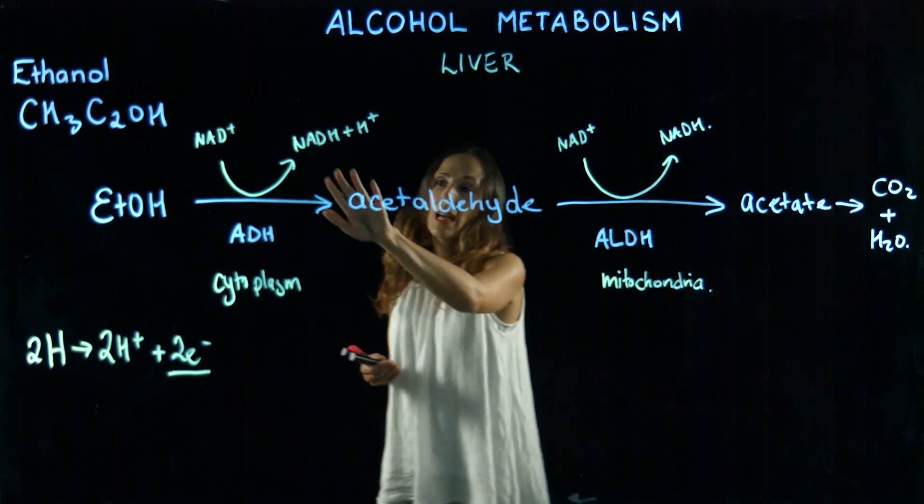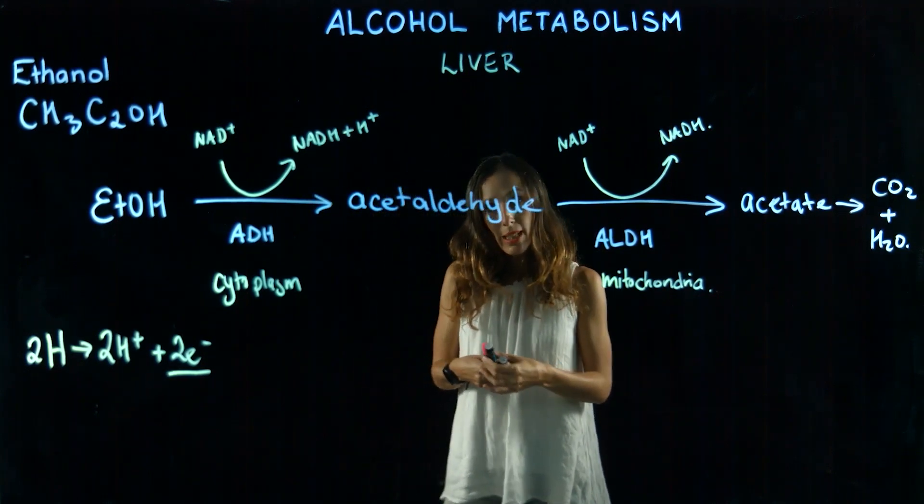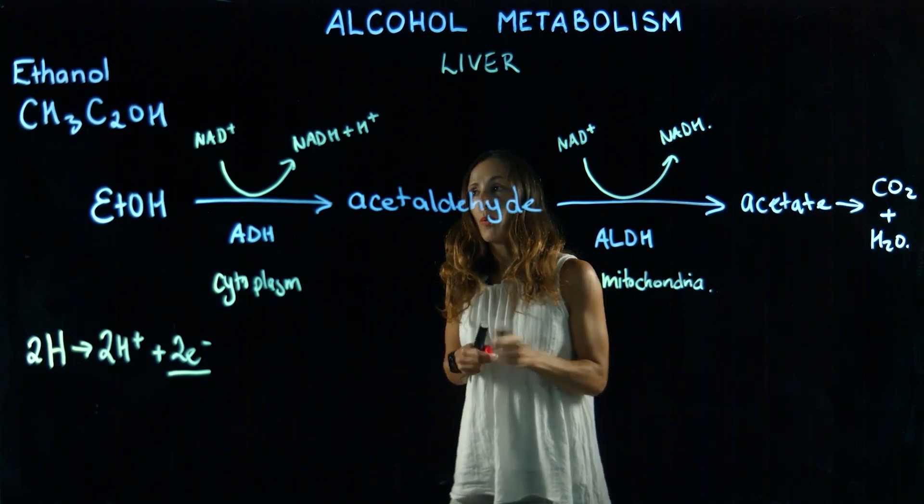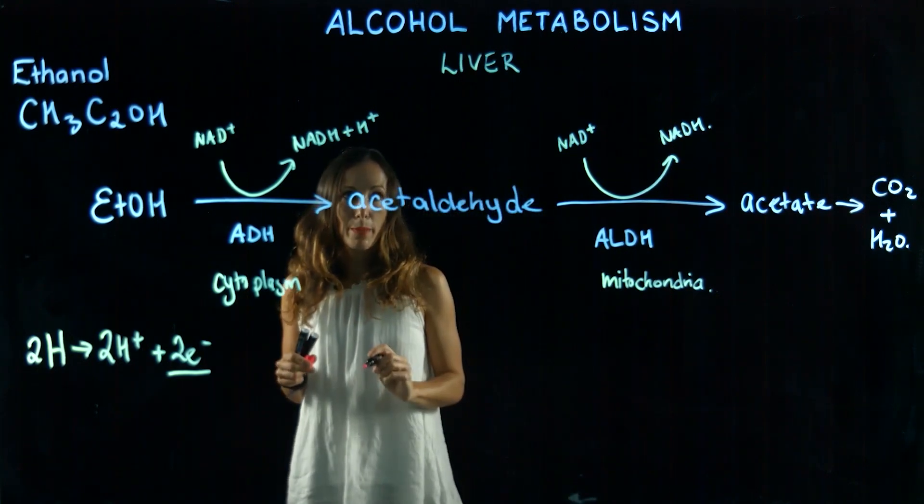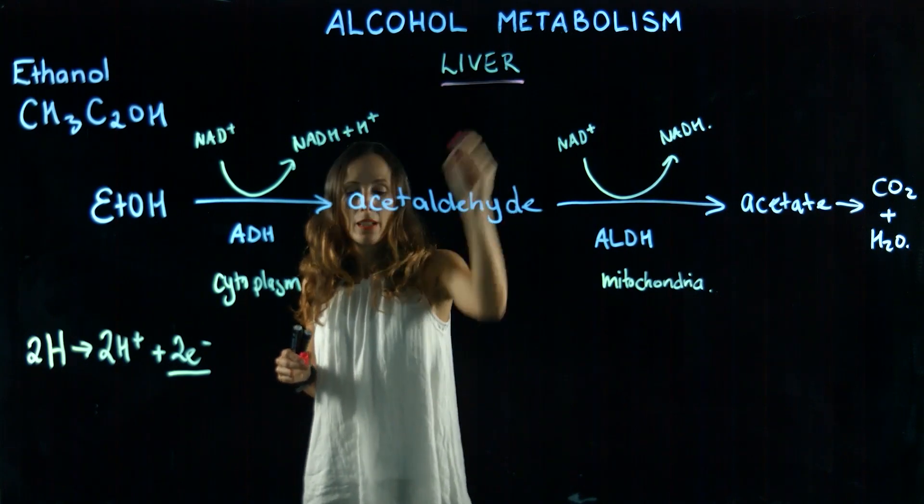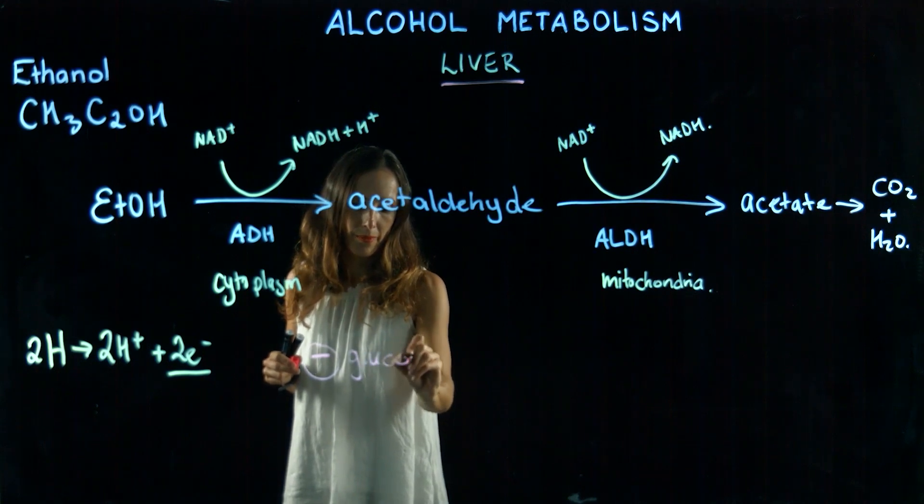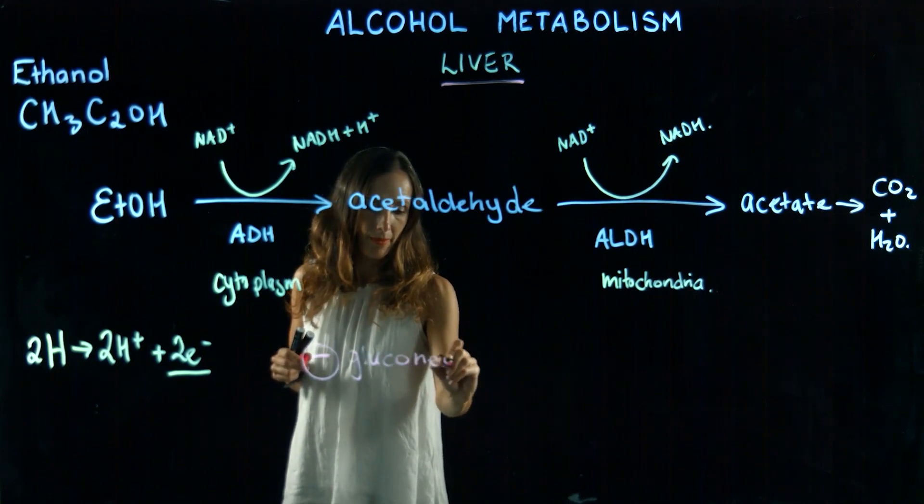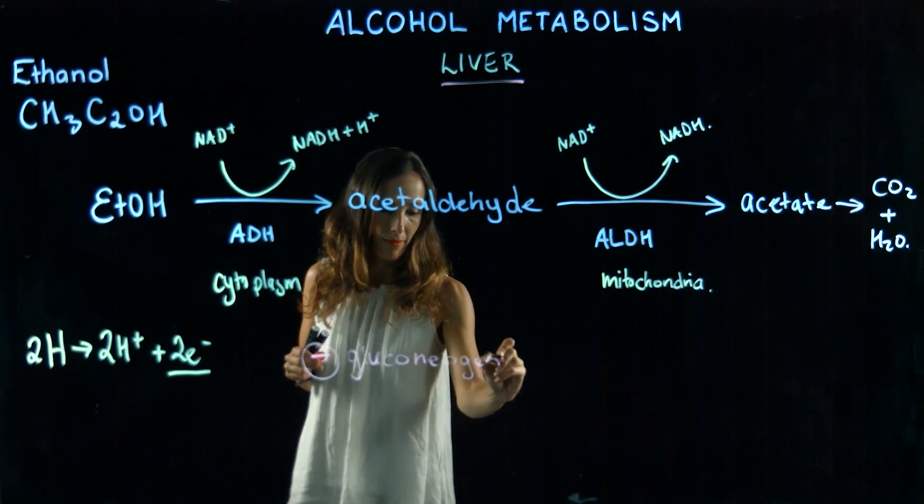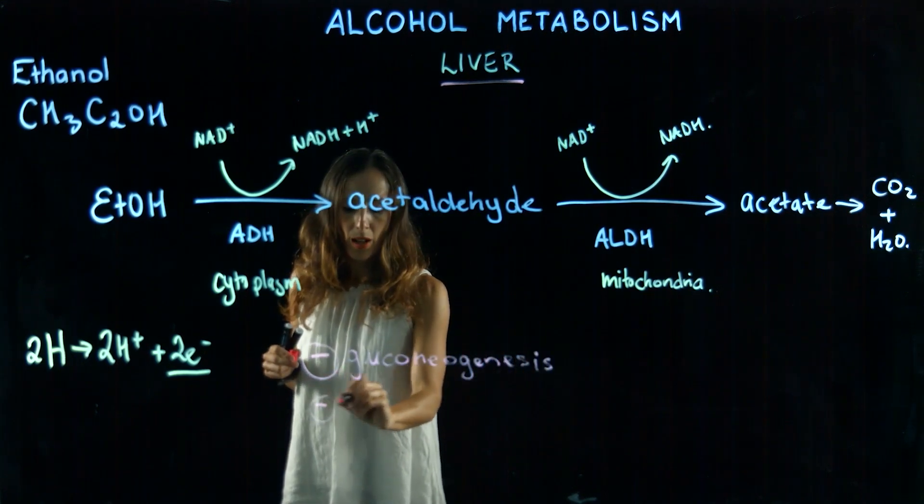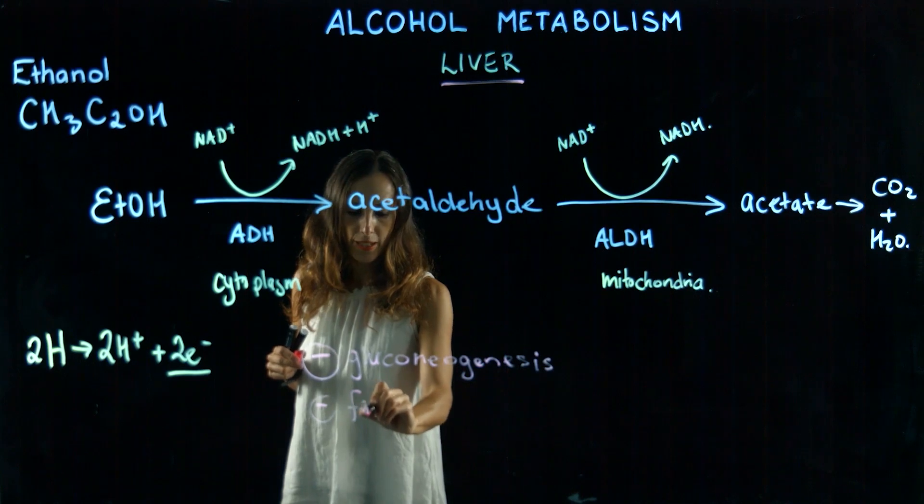If we have a large amount of NADH, that means we have other processes that are being regulated. When alcohol metabolism is being carried out in the liver, we have inhibition of gluconeogenesis and we also have inhibition of fatty acid oxidation.